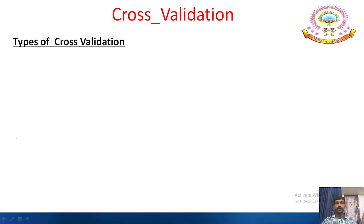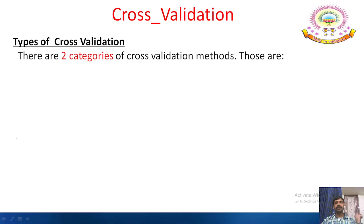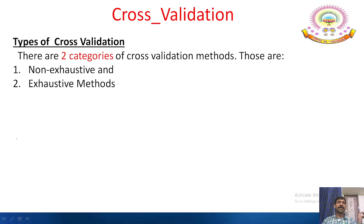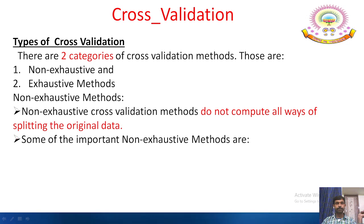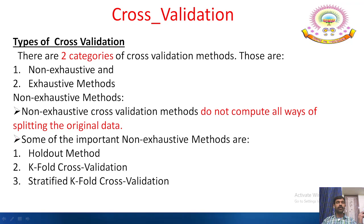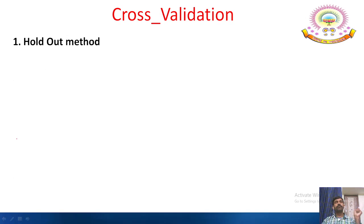Non-exhaustive cross validation methods do not compute all ways of splitting the original data. Some important non-exhaustive methods are the holdout method, k-fold cross validation, and stratified k-fold cross validation. The holdout method is the simplest evaluation method and is widely used in machine learning projects.